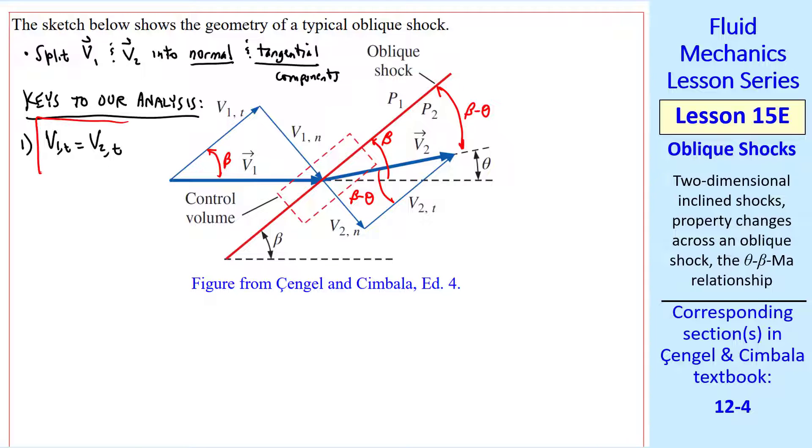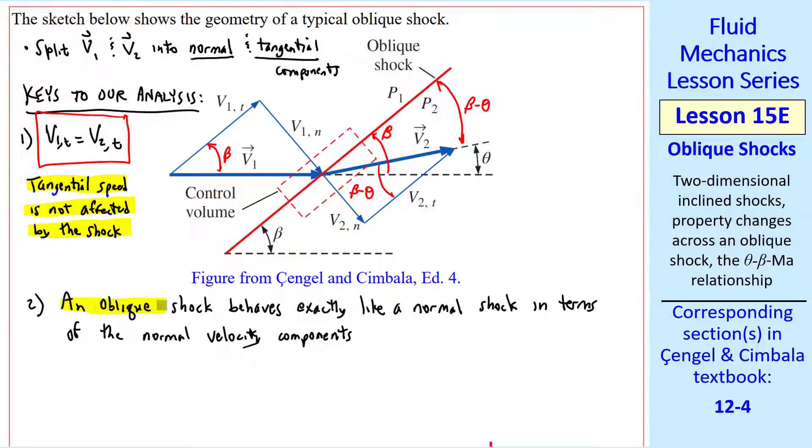There are two keys to our analysis. First, V1t equals V2t. This component is identical to this component. In other words, tangential speed is not affected by the shock. The flow parallel to the shock kind of goes along for the ride. The second key is that an oblique shock behaves exactly like a normal shock in terms of the normal velocity components. This will enable us to use the same equations we had for a normal shock, except we'll consider the normal components only.